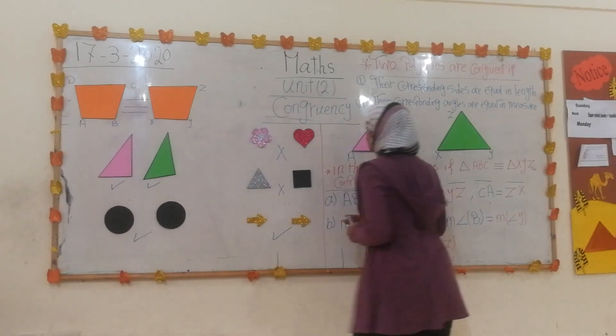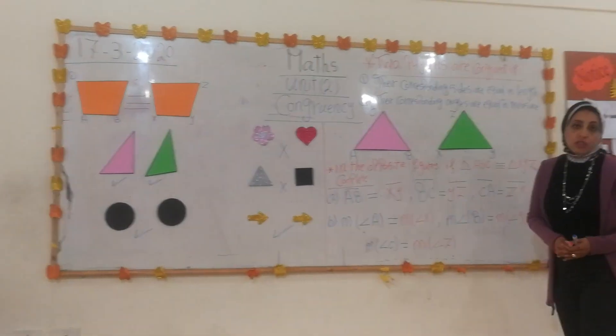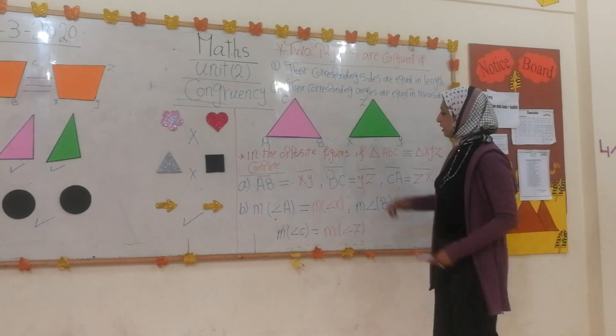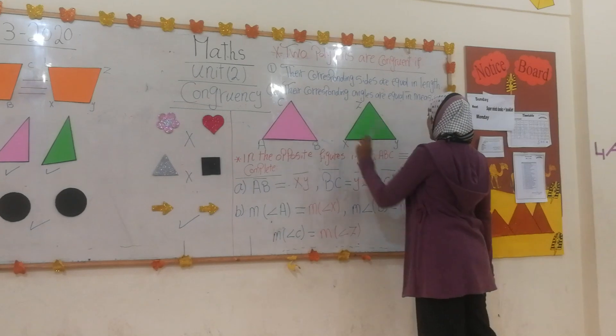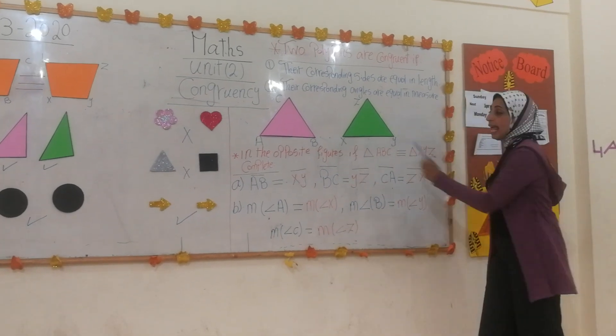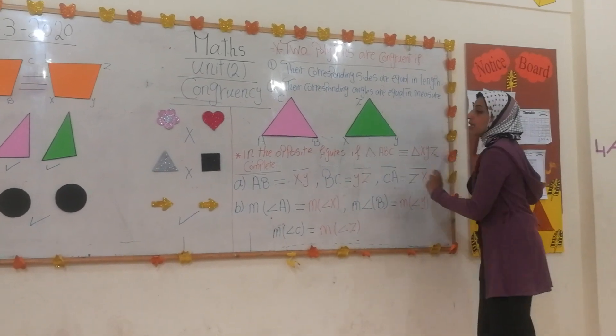Now, we have a problem to answer this question. In the opposite figure, if triangle ABC is congruent to triangle XYZ, complete: